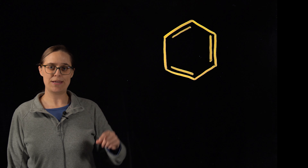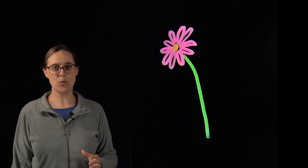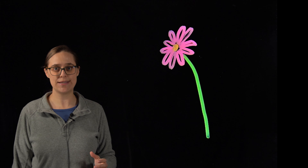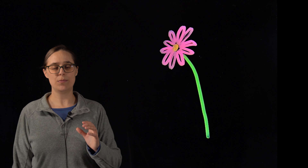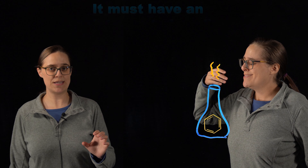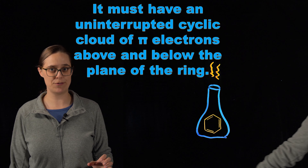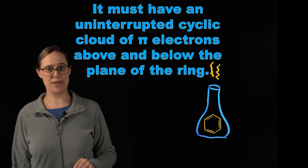We can describe benzene as being aromatic. Aromatic comes from the word aroma. A long time ago, chemists realized that the oils isolated from some plants smell really nice. But over time, we realized that those aromatic compounds have structural similarities. So our chemistry definition of aromatic changed from 'it smells nice' to 'it must have an uninterrupted cyclic cloud of pi electrons above and below the plane of the ring.'